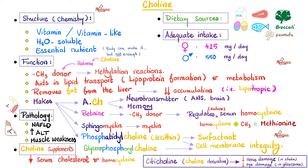Choline is essential. Even though your body can make some choline, the amount synthesized is not enough, so you need choline in your diet. Dietary sources include milk, beef, chicken, broccoli, peanuts, seafood, eggs, and more.